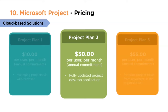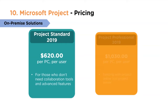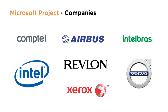Project Plan 5 costs $55 per user per month annually, enabling evaluation of project ideas from anywhere in the organization. Project Standard 2019 costs $620 per PC per user for those who don't need collaboration tools or advanced features. Project Professional 2019 costs $1,030 per PC per user and syncs with Project Online and Project Server. Organizations using Microsoft Project include Comptel, Airbus, Intel, Volvo, and Xerox.